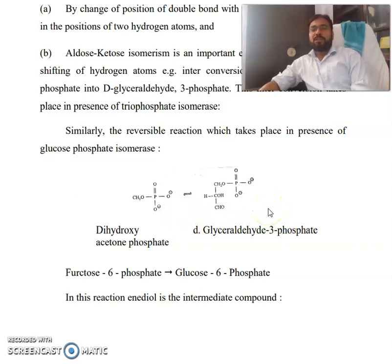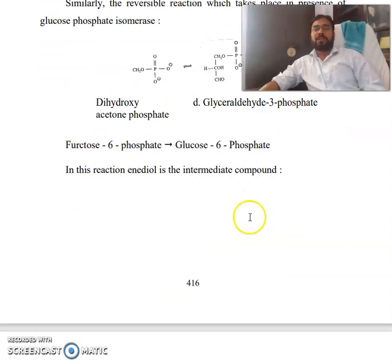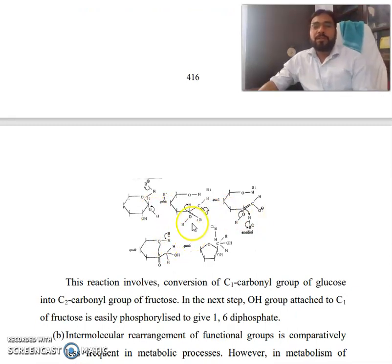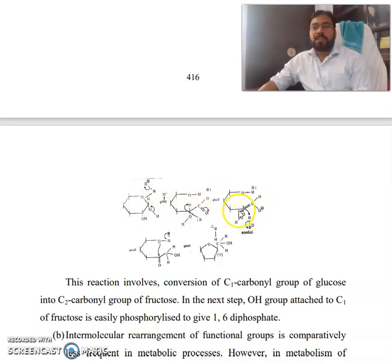So my friend, from glucose-6-phosphate in this reaction, enediol is the intermediate compound. Look at this — how this OH group is, the OH bond will break and then breaking of this ring, and then you can see formation of the ring. This ring is larger than this one, meaning this is a 6-membered ring and this is a 5-membered ring.